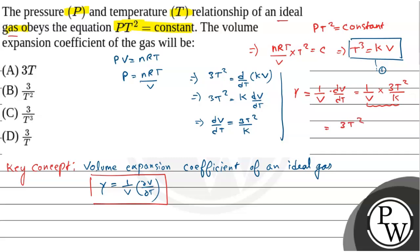So this equals 3T² by T³. This equals 3 by T. So the value of the volume expansion coefficient is 3 by T.